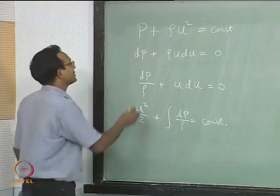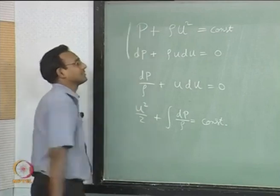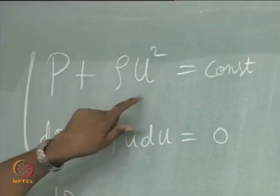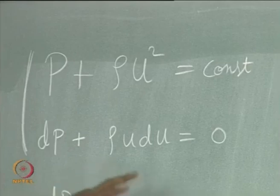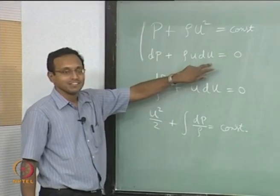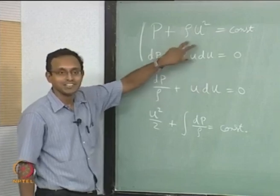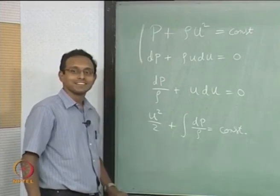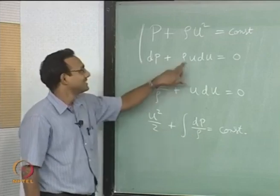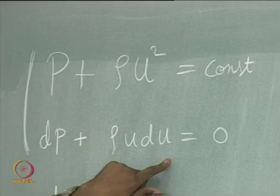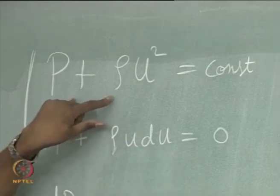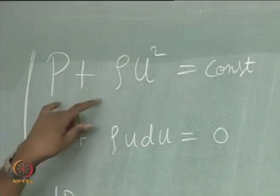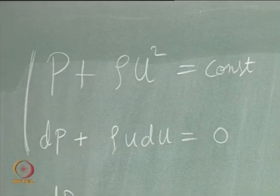Now the next thing I want to talk about is how these two equations are related. They are both the same momentum equation. One is P + ρU² = constant, the other is dP + ρU dU = constant. If I simply integrate, I should get U²/2, but that is not there. What is going wrong? It turns out density is sitting there — if I keep density constant it will become U²/2, but this is derived for the full compressible flow equation, so it will differ. I will tell you a quick way to derive this.